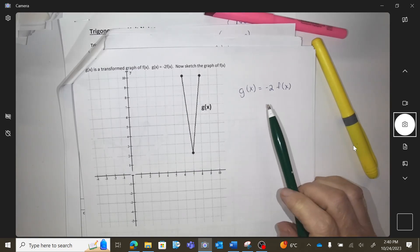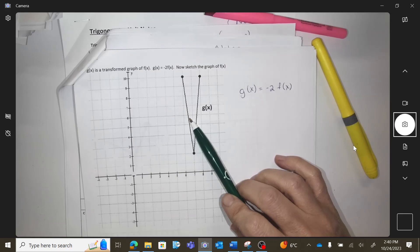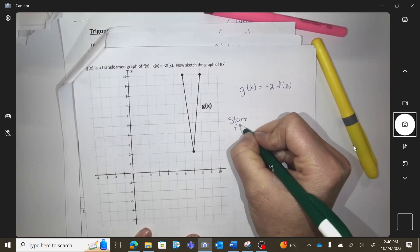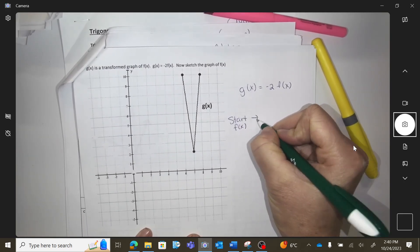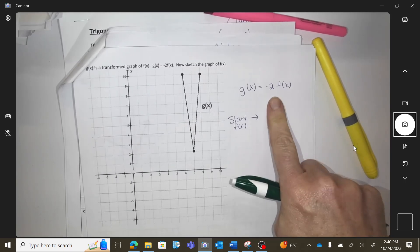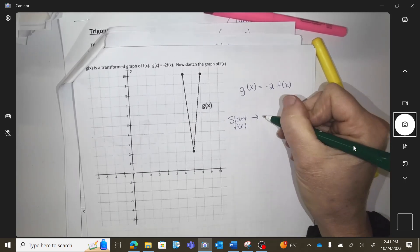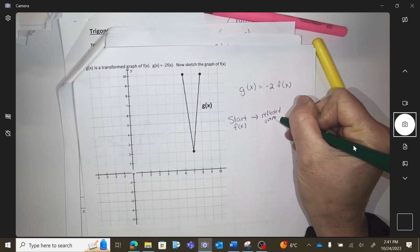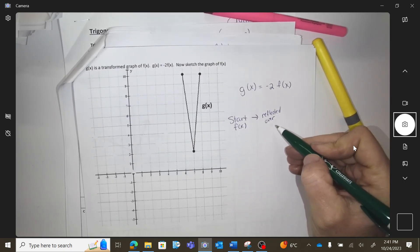Okay, ready? This is the end graph, what did I start with? So I started with something, I started with f. What did I do to f? I would have reflected over the, which axis? What's the negative in the front going to do? Which axis does that flip it over?